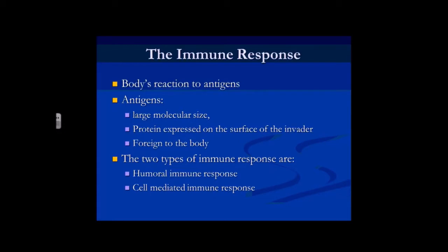The immune response is the way the body reacts to antigens. The antigen itself is the protein on the surface of whatever the pathogen is, and it's what the body uses to identify it as non-self. You can think of everything as having a little flag or name tag on the outside. Whatever the antigen says is not something the body recognises, so it knows it's not our own — and therefore it tries to get rid of it.